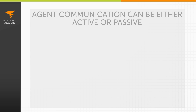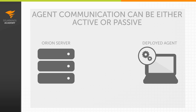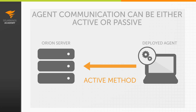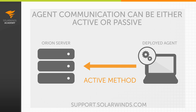Agent communication can be deployed as either active or passive. When using the passive or server-initiated method, the agent waits for requests from the server. You must have a direct route from the Orion server or additional poller to the target machine where the agent is installed. When using the active or agent-initiated method, all communication between the server and the agent is initiated by the agent. This method is most useful when the target machine cannot accept certain inbound connections. More information about agents and their requirements and benefits can be found on the Success Center.